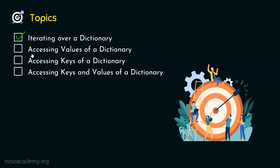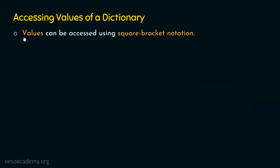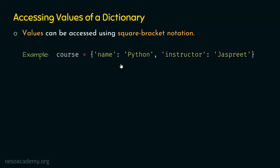Now we will learn how to access values of a dictionary. Values can be accessed using square bracket notation. If we want to access values of a dictionary, we can use the square bracket notation for this purpose. Let's take the same course dictionary, and this time, in place of keys, we want to access values.